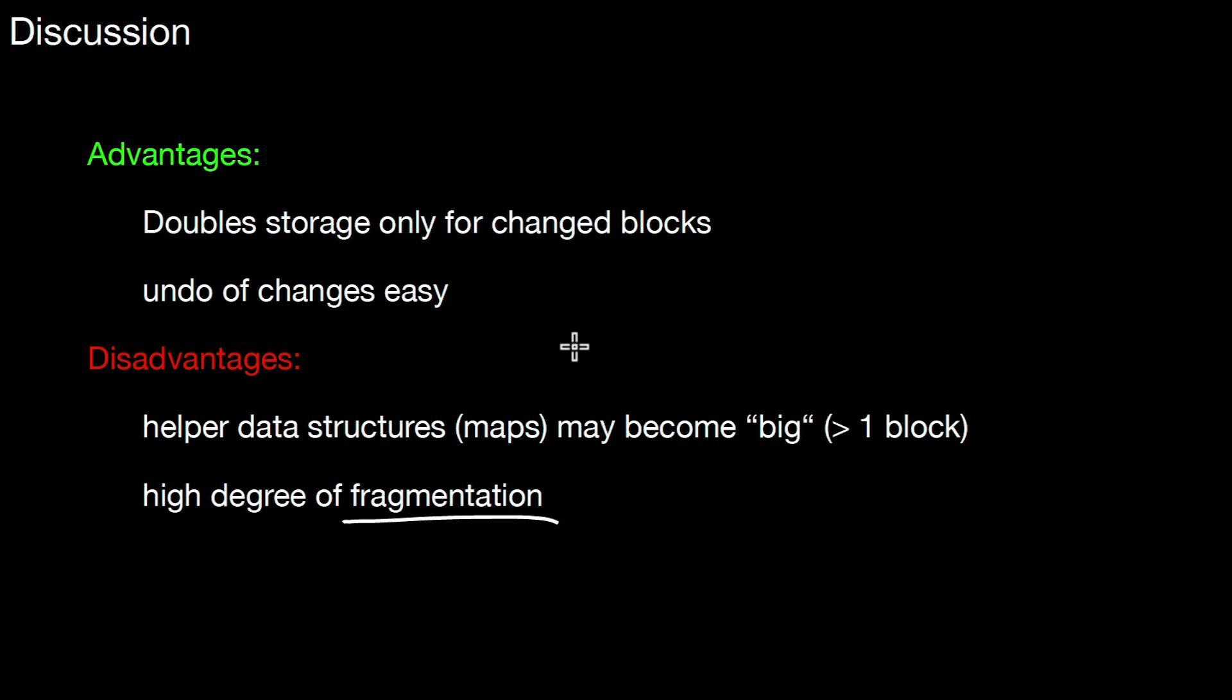But, interestingly, this is still in use in many, many different situations. So, one is virtual memory. Virtual memory is exactly doing that. It's mapping virtual memory addresses to physical addresses. And that's done by shadow storage. I will do a separate video on that. In addition, some file systems use this method. ZFS is one of them. So, this idea of doubling the storage only for the changed blocks actually has a separate name. And again, this is something we find in many places in data management and operating systems. It's also called copy-on-write. And we will revisit that several times throughout this lecture.